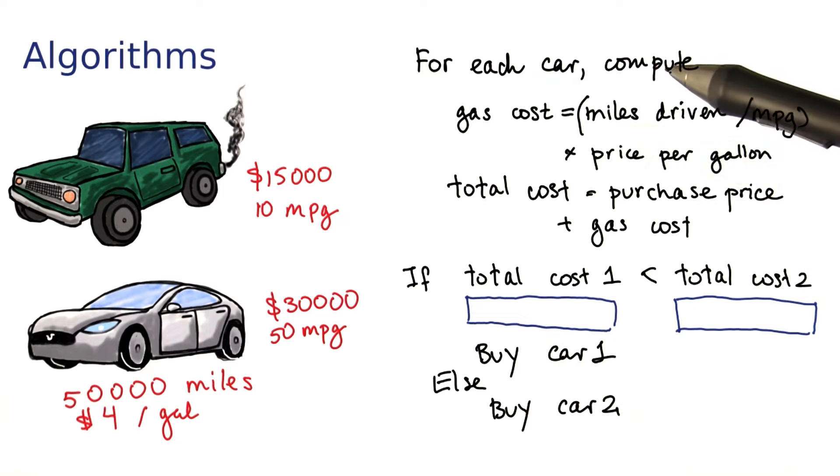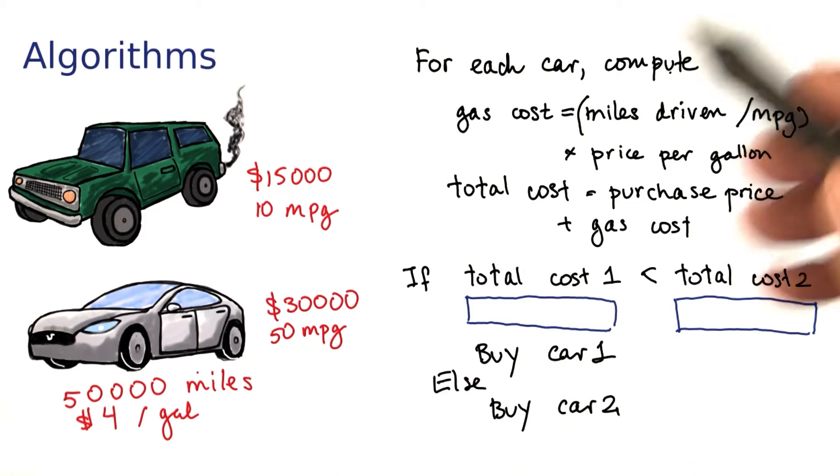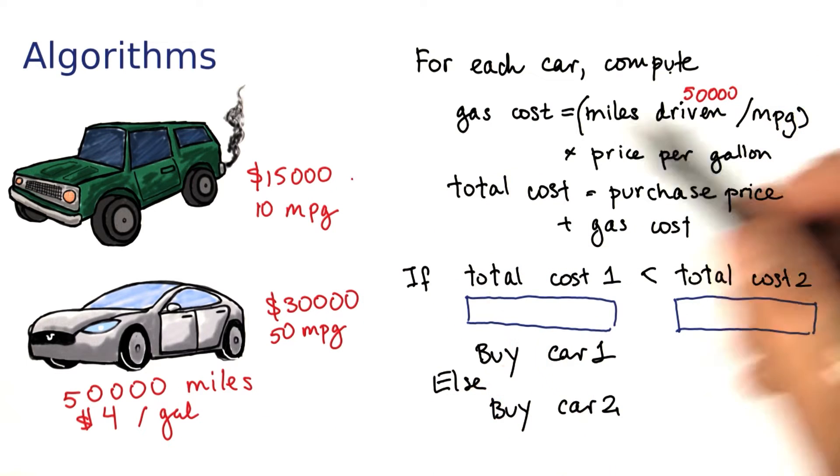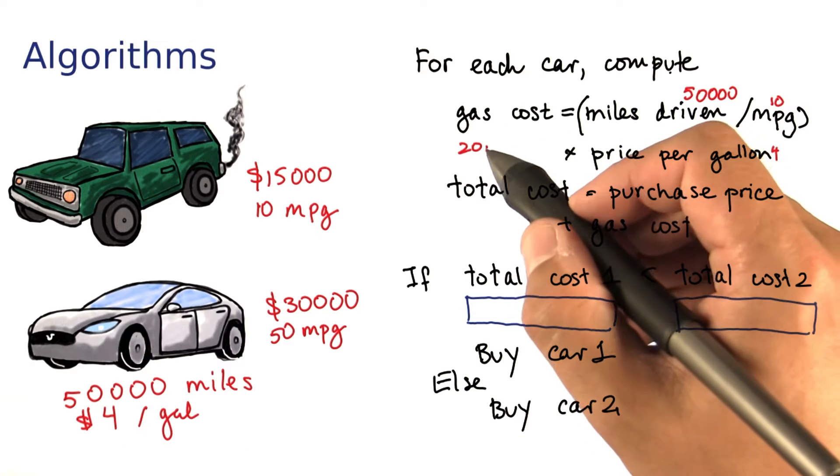Alright, here's how I did it. I go through the first step. Miles driven is 50,000. The first miles per gallon is 10, so that's 5,000. The price per gallon is $4. 5,000 times 4 is $20,000.